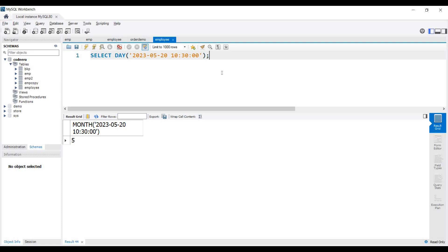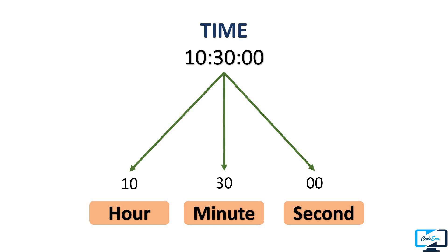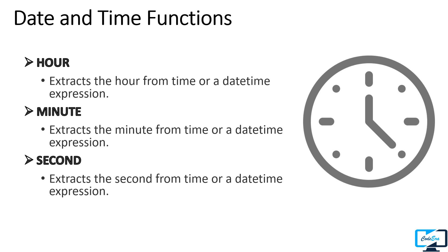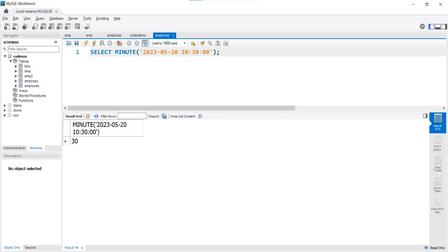In this way you can use these three functions which are very easy to use. Likewise with date, if we have a time or datetime expression as input, we can extract only hours, minutes, or seconds. We use the HOUR function to extract hours, the MINUTE function to extract minutes, and the SECOND function to extract seconds from a time or datetime expression. For example, using the MINUTE function on a datetime expression gives an output of 30, which is the minute in the given expression.